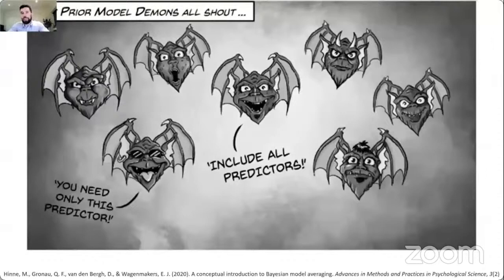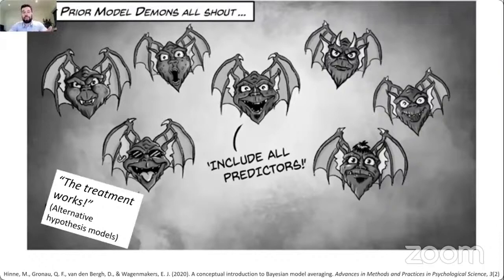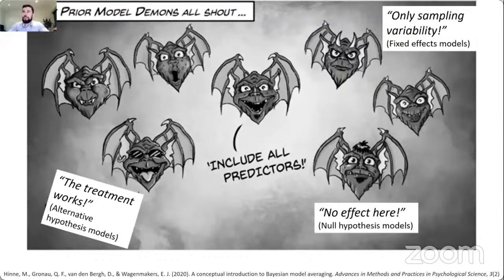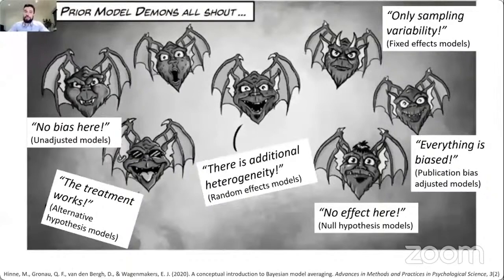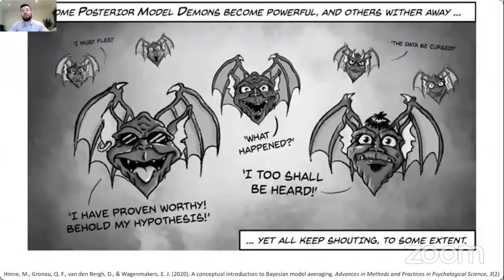Bayesian model averaging works as follows. You have different hypotheses represented by different models — for example, one model says the treatment works so the alternative hypothesis is true, another says there is no effect. You can have different assumptions about heterogeneity via fixed and random effect models, or different assumptions about the presence or absence of publication bias. You specify all these hypotheses across models in your ensemble, feed the models with data, and models that predict the data best will have their voice heard much more — you base inference more strongly on well-fitting models.